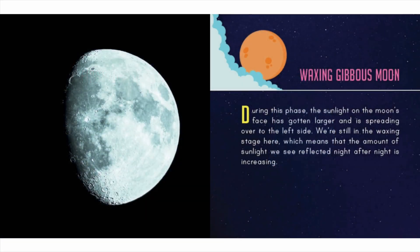Waxing gibbous moon: during this phase the sunlight on the moon's face has gotten larger and is spreading over to the left side. We're still in the waxing stage here, which means that the amount of sunlight we see reflected night after night is increasing.